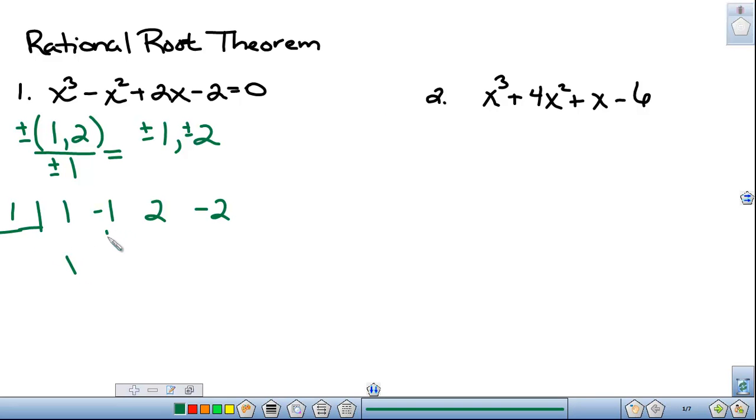I'm going to go back to this list and I guess I'll choose 1. 1 times 1 is 1. Add those together, you get 0. 1 times 0 is 0. Add those together, you get 2. 1 times 2 is 2, and add those together and I get 0. So I have found a zero of this function, and it happens to be the number 1.